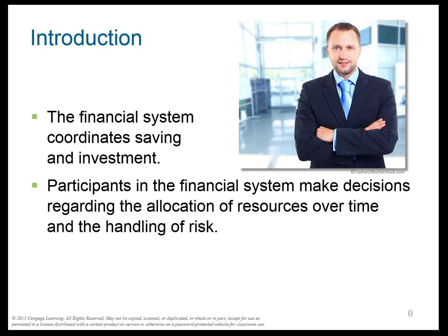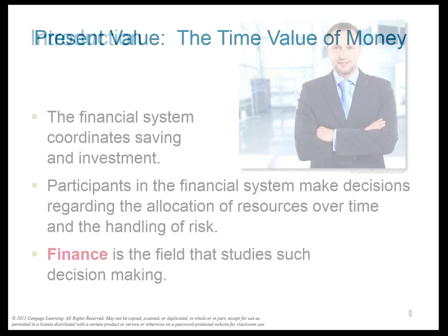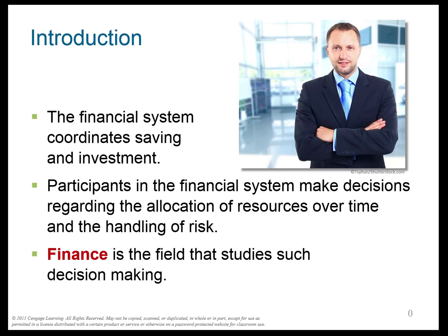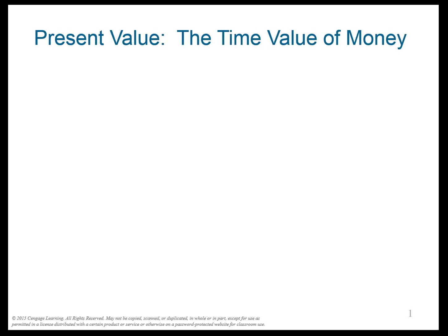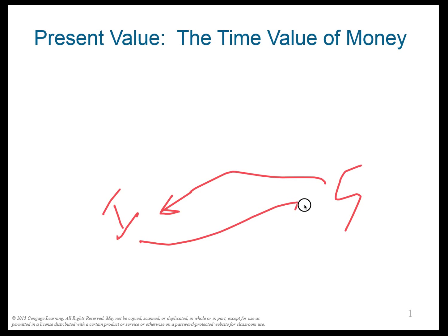The financial system coordinates savings and investment. The savers and investors make decisions on how much to save and how much to borrow and invest, and they do this over different time periods. This branch of economics is called finance. We have to think about the present time value of money, because when the saver sends money to the investor, the investor sends back a return, but it's not in the same time period.